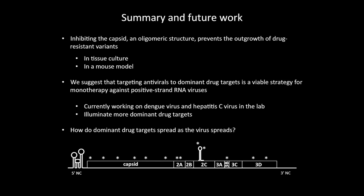In conclusion, inhibiting the capsid — an oligomeric assemblage — prevents the outgrowth of drug resistance both in cell culture and in the mouse model. We don't think this is specific to poliovirus or just the capsid. We're working on other targets, including an intramolecularly cleaving protease and the RNA-dependent RNA polymerase. Other people in the lab work on dengue virus and hepatitis C with this same idea. I've also become very interested in how the virus spreads, because it's possible that cell-to-cell spread is contributing to the success of dominant drug targets.